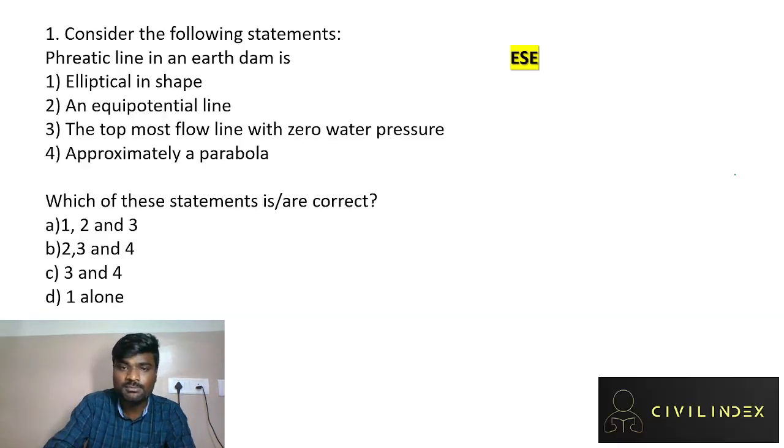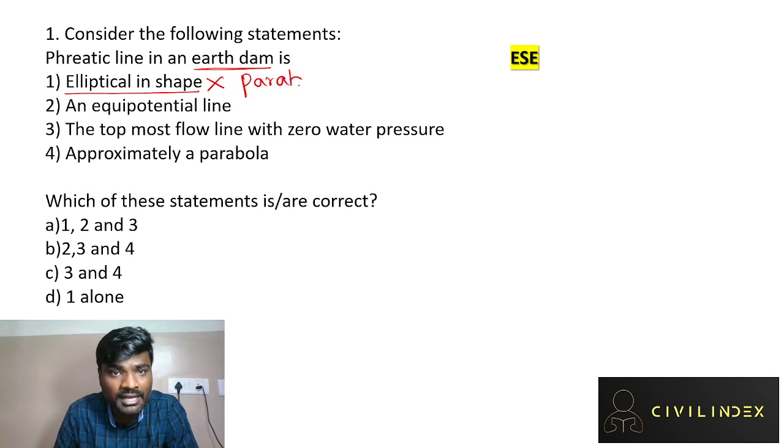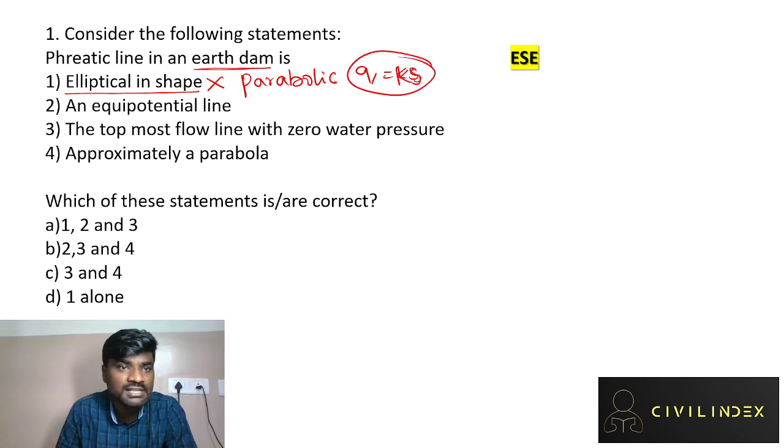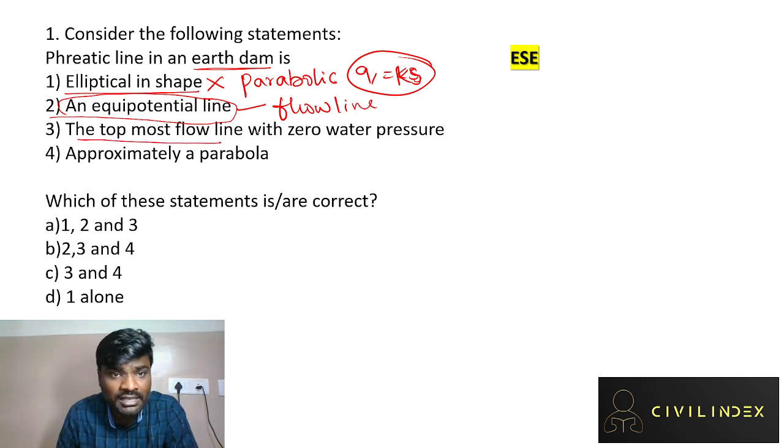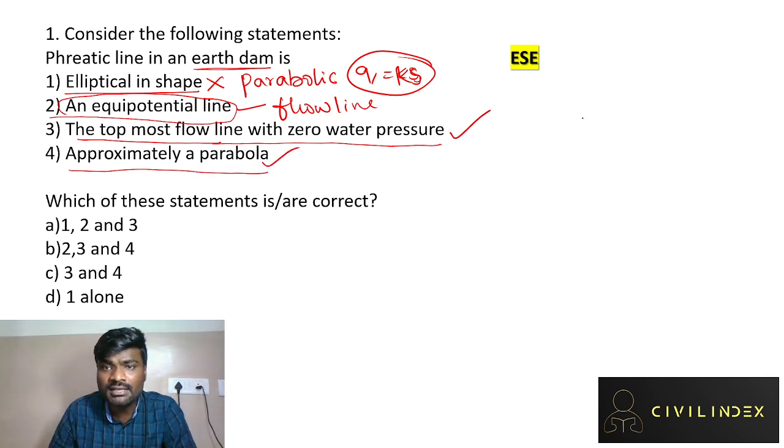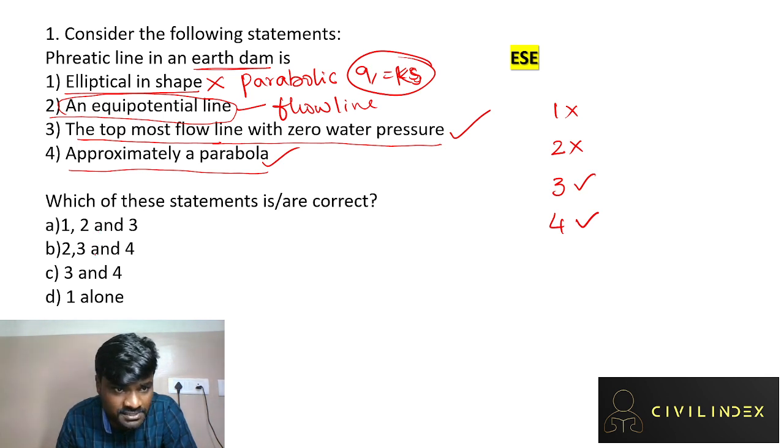Now let's look at questions. First question is from ESC Engineering Services. Consider the following statements: phreatic line in an earthen dam is elliptical in shape - no, it's parabolic shape. For this we have the equation Q equals k s. Next statement: phreatic line indicates an equipotential line - no, it's a flow line, not equipotential. Next: the topmost flow line with zero water pressure is called phreatic line - yes, correct. Approximately a parabola - yes, correct. So first statement wrong, second wrong, third correct, fourth correct. Select the answer per your options: three and four are correct, so option C is the correct answer.